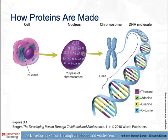How proteins are made: the genes on the chromosomes in the nucleus of each cell instruct the cell to manufacture the proteins needed to sustain life and development. The code for the protein is a particular combination of the four letters T, A, G, C.